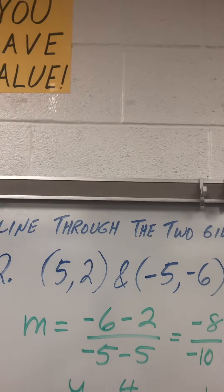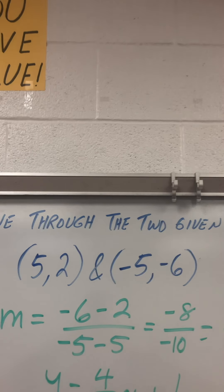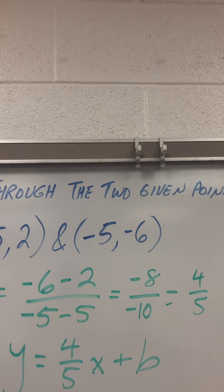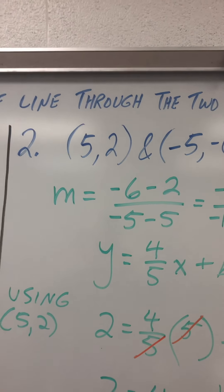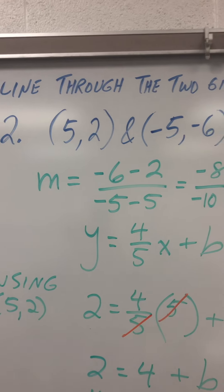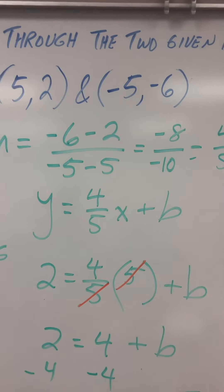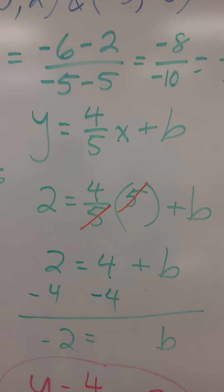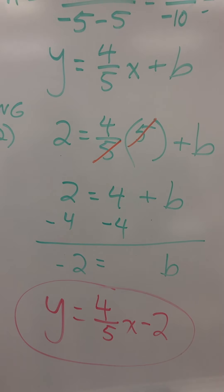Here I'm going to do negative 6 minus 2 over negative 5 minus 5. Gives me negative 8 over negative 10, which is 4 over 5. Y equals 4 fifths x plus b using 5, putting in 2 for y and 5 for x. The 5's cancel. I get 2 equals 4 plus b minus the 4. So y equals 4 fifths x minus 2.